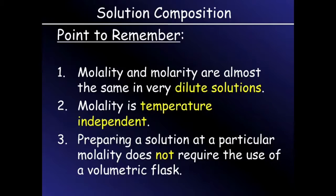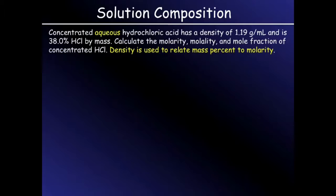Let's look at some calculations of these concentrations and how we can convert between concentrations. For this particular problem, we have a concentrated aqueous hydrochloric acid solution with a density of 1.19 grams per milliliter.